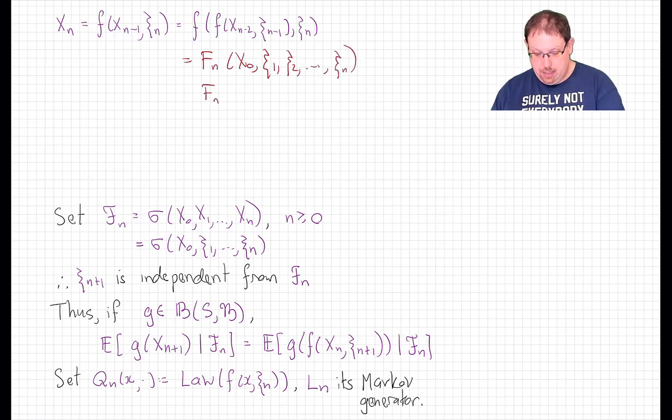Where that function capital F_n, it takes the state space, this variable here, and n copies of the random auxiliary state space R, and spits out something in S.